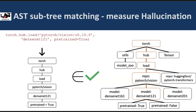Accuracy is when the LLM does what you want it to do. Hallucination is when it invokes something that doesn't exist at all. By pulling classical concepts from compiler literature — the abstract syntax tree — we can actually measure hallucination for LLMs in the domain of function calling and tool use.